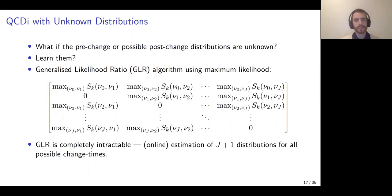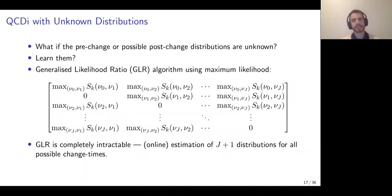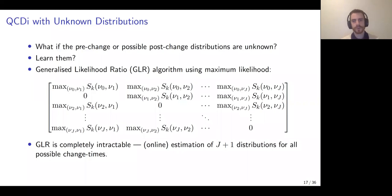All of that discussion and those optimality results were developed under the assumption that the pre-change distribution is known exactly and that the possible post-change distributions are also known and specified, and implicitly restricted to a finite set of candidates. The obvious question for practitioners is: what if the pre-change distribution is unknown, and what if the possible post-change distributions are also unknown? Do we learn them?